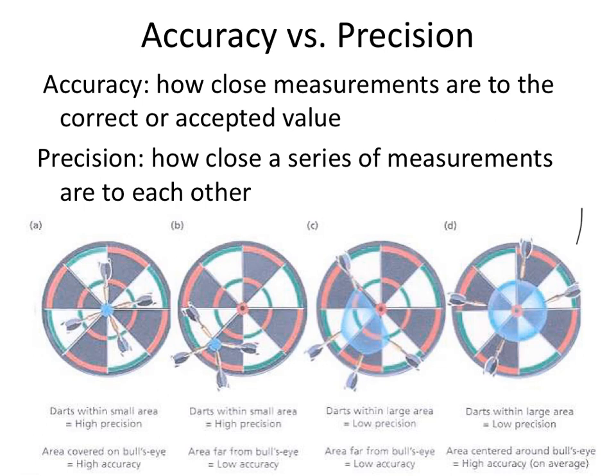So somebody who is six feet tall — if you said they were 5'11 or 6'1, you'd be pretty close, and so your accuracy in terms of your description would be pretty spot on. Now, precision is referring to how close a series of measurements are to one another. Precision will also indicate the number of places to the right of a decimal that a piece of measuring equipment will give you. A very precise piece of equipment will give you lots of digits.